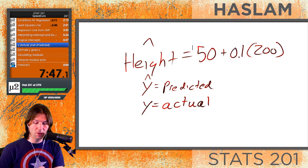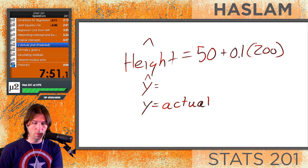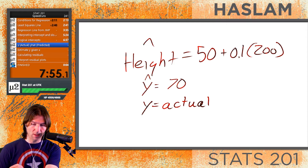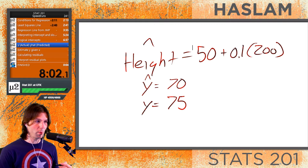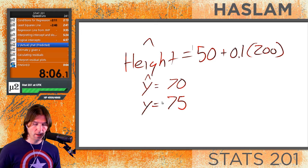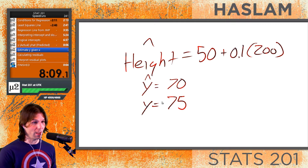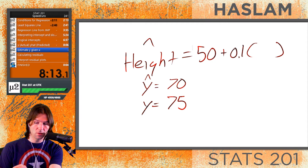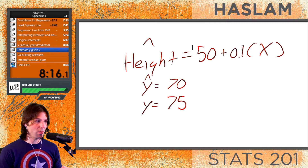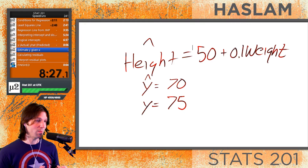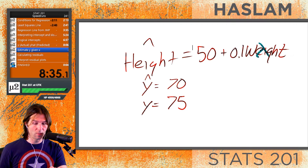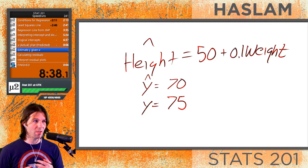The actual value, Y, is what we observe in reality. The equation predicted Brian is 70 inches tall, but Brian is actually 75 inches tall. So Y-hat is what the equation predicts and Y is what is actually true. You can solve this equation at any time to predict height by plugging in a value of X — someone's weight.